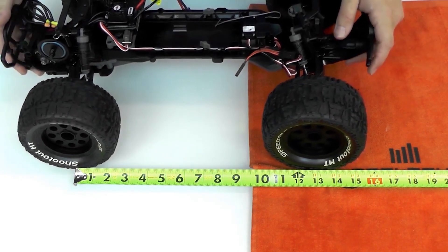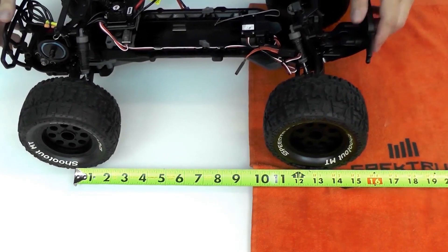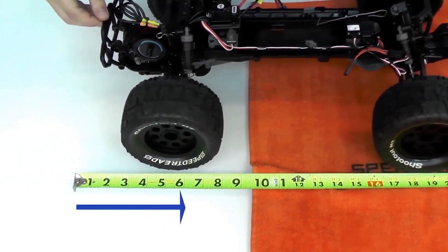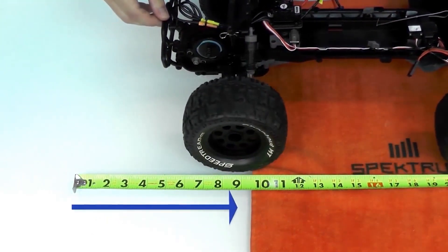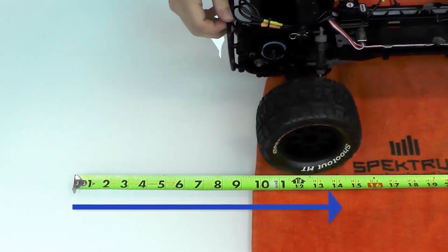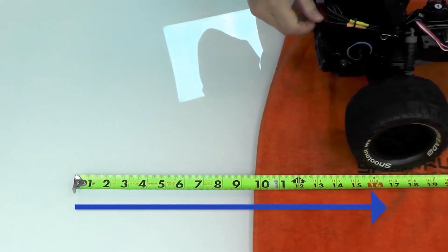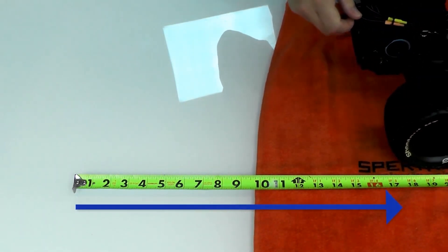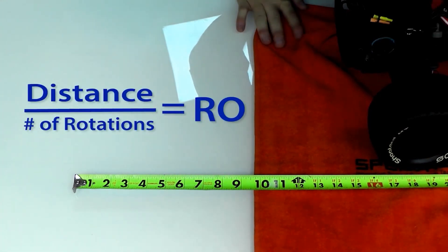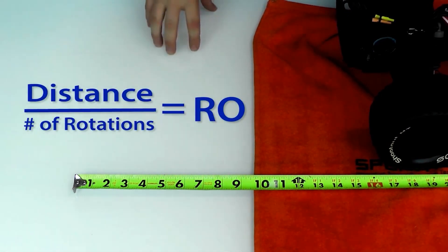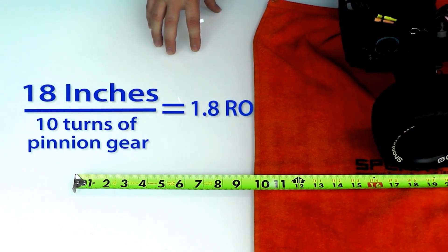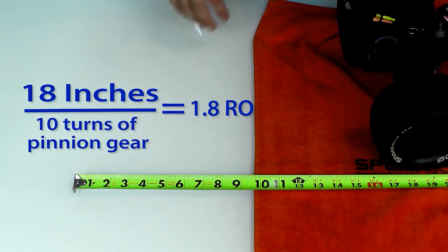And we'll move forward so that we count 10 turns. So let's try this: one, two, three, four, five, six, seven, eight, nine, ten. Right here we got 18 inches. So what we do is we divide 18 by 10, so we're gonna get 1.8. That will be the rollout of our RC car.